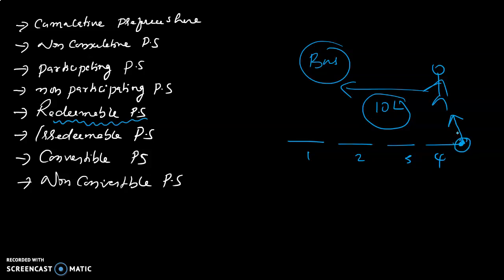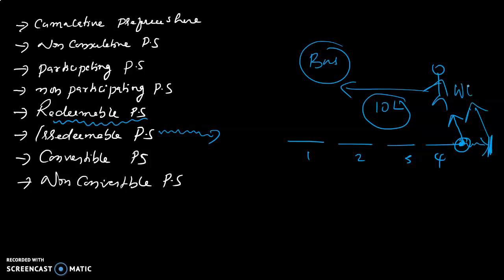The preference shareholder's invested amount is returned after a specified period of time. In contrast, irredeemable preference share means the amount is not returned after a specified period of time — it is only returned at the end, at the time of winding up of the company.